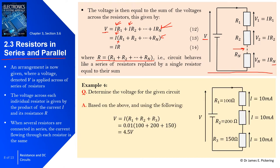As an example, determining the voltage for a circuit with three resistors in series — R1 = 100 ohms, R2 = 200 ohms, R3 = 150 ohms — and a current of 10 milliamps. Using V = I × (R1 + R2 + R3): V = 10 milliamps × (100 + 200 + 150) = 4.5 volts.